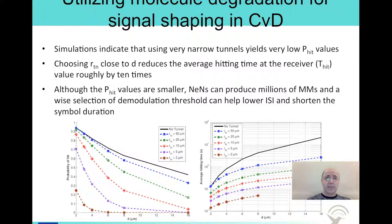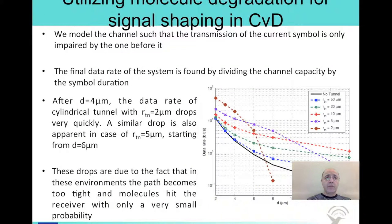Since the nanomachines can produce millions of messenger molecules with a wide selection of demodulation threshold, we can help lower inter-symbol interference and shorten the symbol duration. With the help of this cylindrical channel, it is possible to minimize inter-symbol interference. We can calculate the data rate by dividing the channel capacity by the symbol duration. We observe that there is a critical value for the width of the cylindrical channel. For radii of 2 and 5 micrometers, there is a sharp decrease in performance after the distance between the transmitter and the receiver exceeds some limit. However, for a radius of 10 micrometers, we observe an improvement by an order of magnitude.